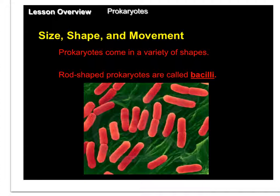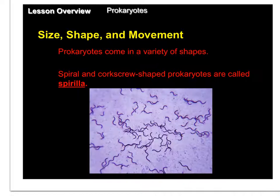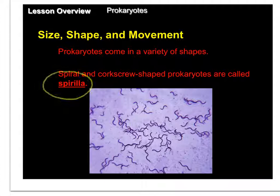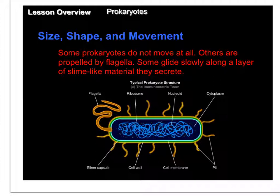Prokaryotes come in a variety of shapes: rod-shaped prokaryotes are called bacilli, spherical prokaryotes are called coxii, and spiral or corkscrew-shaped prokaryotes are called spirilla. These three shapes are typical of both bacteria and archaea. Prokaryotes can also be distinguished by how they move — not all prokaryotes move, but when they do, they often use a flagella or excrete a slime-like material that helps them slide along.